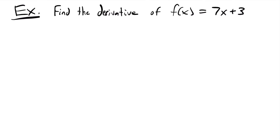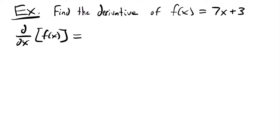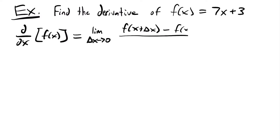Welcome back. We're going to start with this example where we have to find the derivative of the function 7x + 3. The derivative of a function is equal to the limit as delta x approaches 0 of f of x plus delta x minus f of x, all divided by delta x.